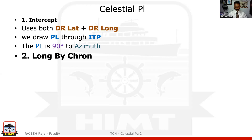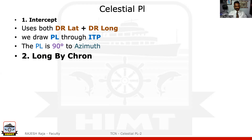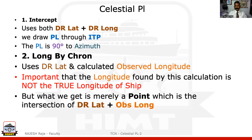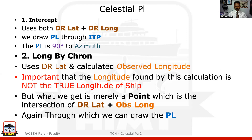In Long by Chron, I will be given my dead reckoning position or DR position. But this time I am going to use only the DR lat. After that, I am going to use the calculated observed longitude. This observed longitude is slightly confusing — you should remember that this longitude found by calculation is not the true longitude of the ship. It is merely a place through which I am going to draw my PL and azimuth. So we take the intersection of the DR lat and the observed long, and that intersection is a point through which I am going to draw the PL. The PL is always 90 degrees to the azimuth. I am going to show you in sequence how you will proceed with this type of question.